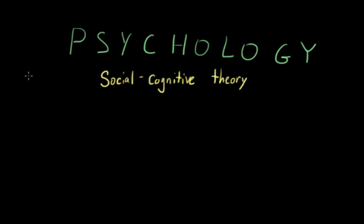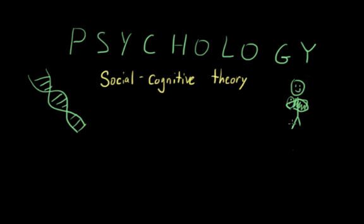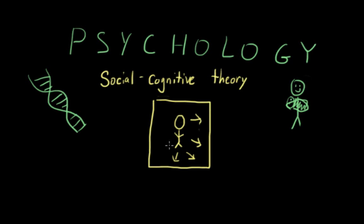Social cognitive perspectives view behavior as being influenced by the interaction between people's traits or cognitions and their social context. If one of the general themes of psychology is the interaction between nature and nurture, we can think of the social cognitive perspective as talking about the interactions between an individual and the situation that they are in.